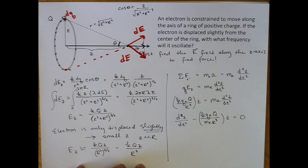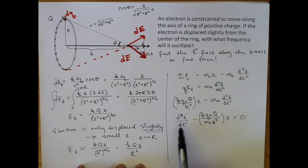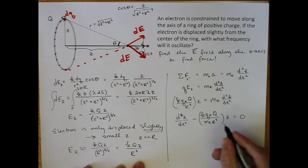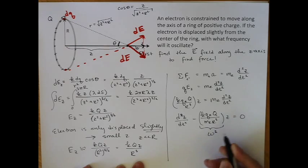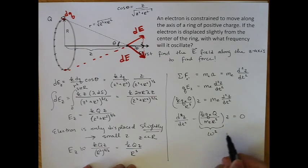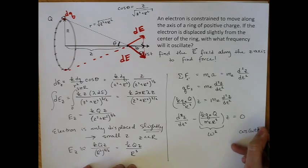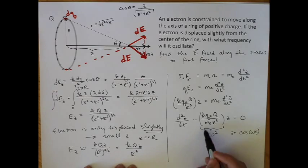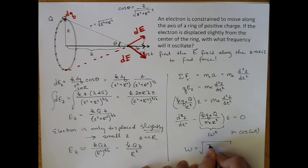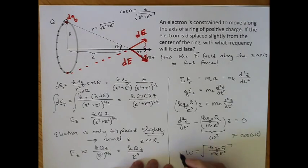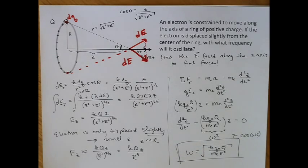And this equation should look very familiar. So the solution to this differential equation is a cosine or a sine, and the frequency that goes with that function we get from this term. And if you think back, this is actually omega squared. So this is the frequency squared that you get, and you get cosine omega t as one of your solutions. And this is omega squared, so that means that omega is the square root of kq_e times q over m_e R cubed. And that's it.